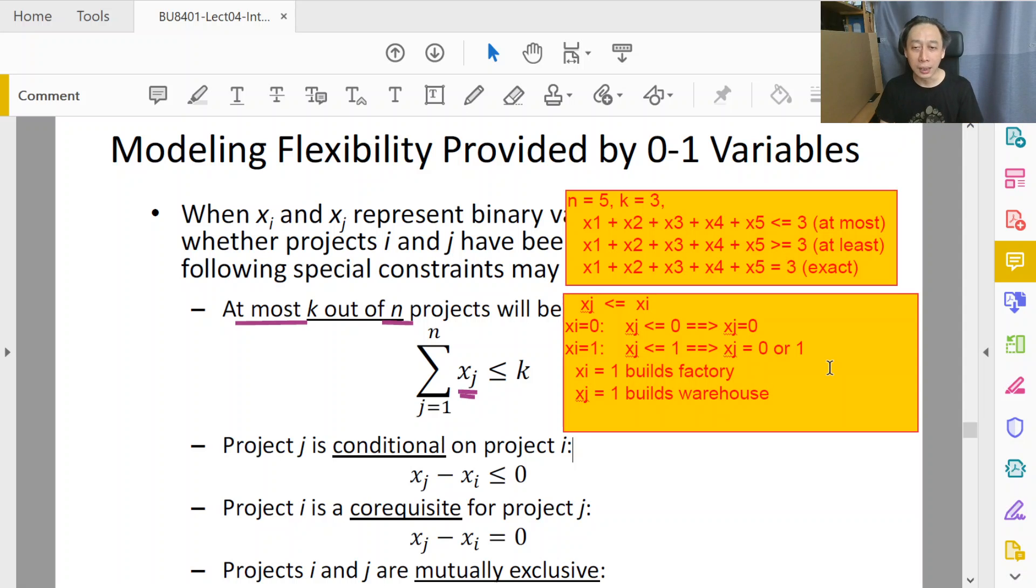So we may consider building a warehouse or we cannot because of other reasons, not because we build a factory. So in this case, we want to tie the connection between the two. And the way to express it is building a factory is a main thing to consider. It's the dominant decision variable. So something has to be less than or equal to the dominant decision variable. And that something is the decision to build a warehouse which is exactly taking this form. So the next time you encounter a situation like this, build a factory and or build a warehouse for use by the factory, then you can think about this.